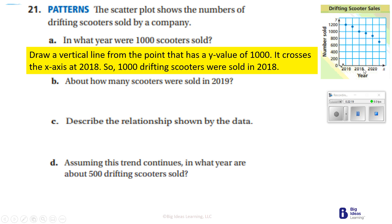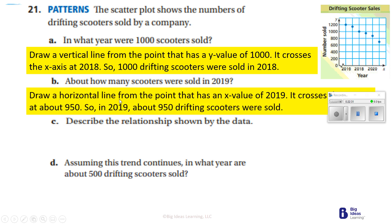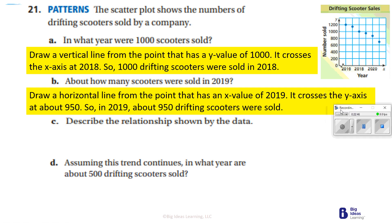About how many scooters were sold in 2019? If 2018 is here and 2020 is there, then 2019 is in between. It's not quite at 1,000 but well above 800 — I'd say about 950. Drawing a horizontal line from x = 2019, it crosses at about 950. So in 2019, about 950 drifting scooters were sold.